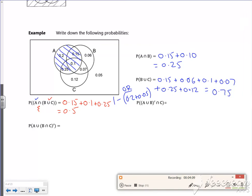So B and C is the overlap, which is the 0.1 and the 0.07. So that's the B and C, but I'm saying it's not B and C, so it's everything else spanning out from this.